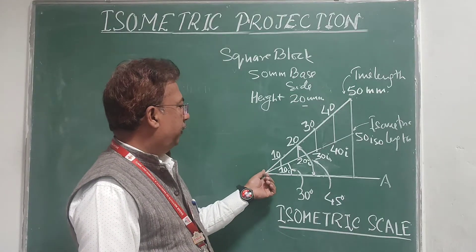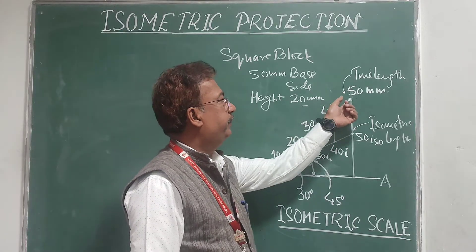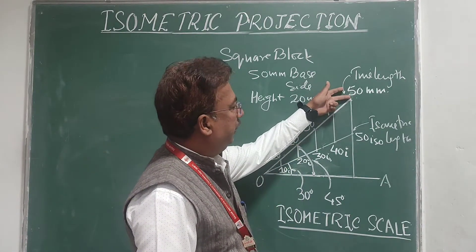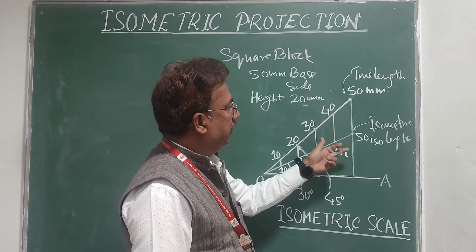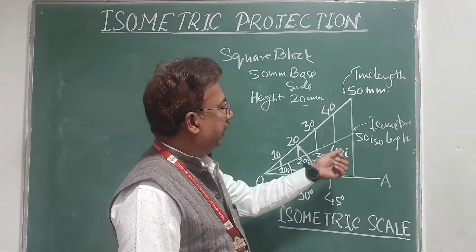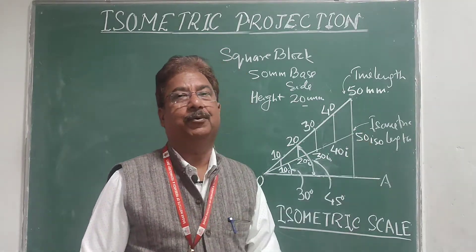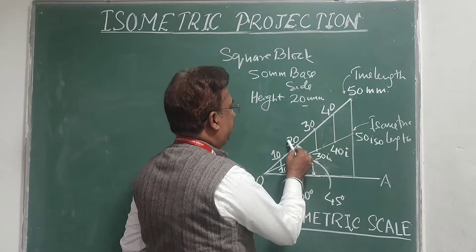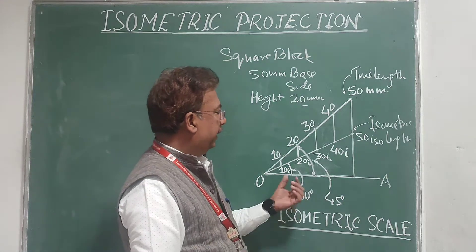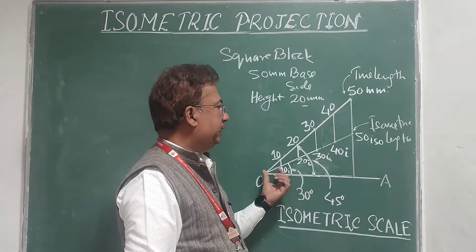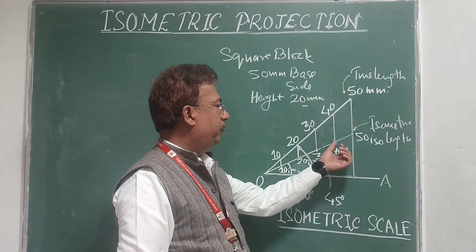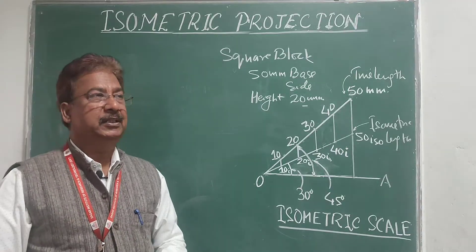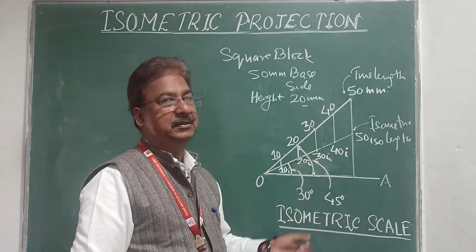If we mark lengths on the 45 degree line, that represents the true length of the object. I have marked 10, 20, 30, 40, and 50 millimeters on the actual scale. From the 50 point, dropping a perpendicular onto the 30 degree inclined line gives ISO 50, which is 9/11 of 50. In this way, we can directly read off 40 iso, 30 iso, 20 iso, and 10 iso from the 30 degree line.